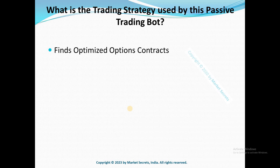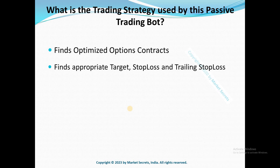The target here is to eat the option premium. For both these positions, the bot also identifies the appropriate targets, stop losses, and trailing stop losses, and immediately places these orders in the system accordingly. We cannot blindly trade option contracts — we need a proper target, stop loss, and trailing stop loss. The trailing stop loss is the most critical one, and the bot will automatically handle it.